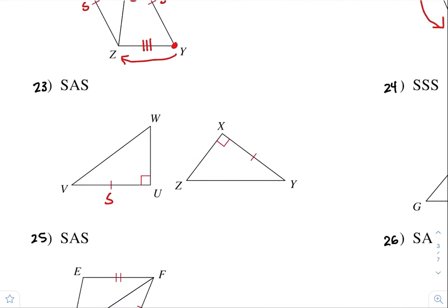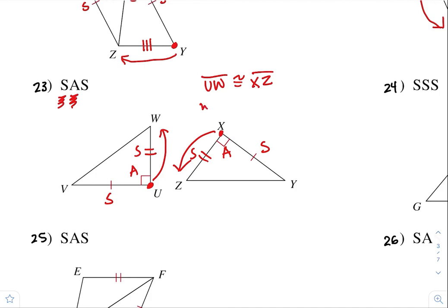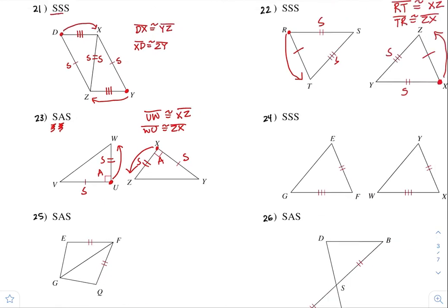Number 23. We have a pair of congruent sides and a pair of congruent angles. To prove side, angle, side, we have our side, we have our angle, but we need a third side. The angle has to be in between the two sides. So you have to force this one to be congruent to this one to achieve SAS. That's line segment UW, which would be the same as XZ. So UW is congruent to XZ, or WU is congruent to ZX.